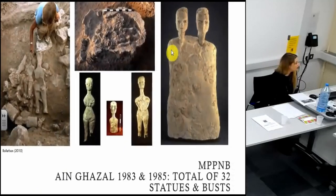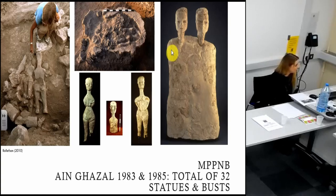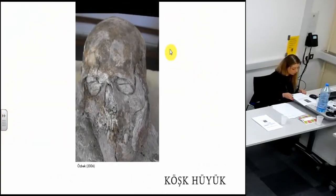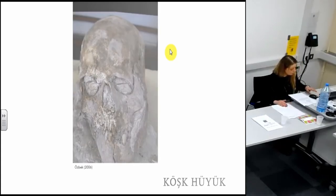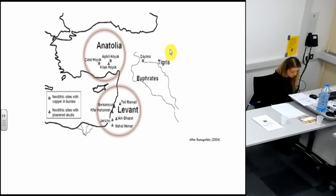At Ein Gazal, they also discovered a total of 32 statues and busts. Kosh Huyuk is an archaeological site from central Anatolia. During the excavation season, a large number of adults and children were found, some with modelled skulls. Thirteen modelled skulls date to the Chalcolithic period, and two modelled skulls were found on the plastered floor near three additional modified skulls. This evidence suggests prominent social differentiation within the Neolithic communities, but the presence of social stratification and ancestor worship is still debated, and the selection of individuals for skull plastering remains to be studied.